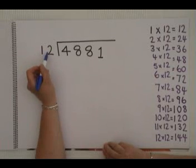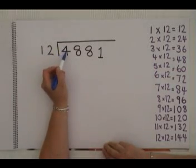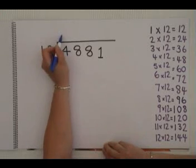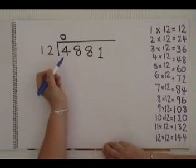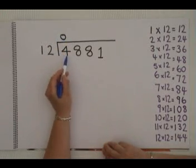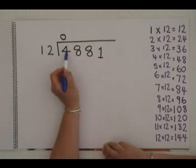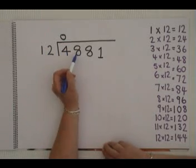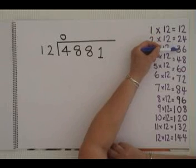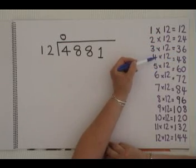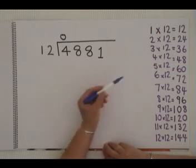To start the sum, you can say 12 fits into 4, 0 times. It's not big enough. You would then say 12 fits into 48, 1, 2, 3, 4 times. 12 times 4 is 48.